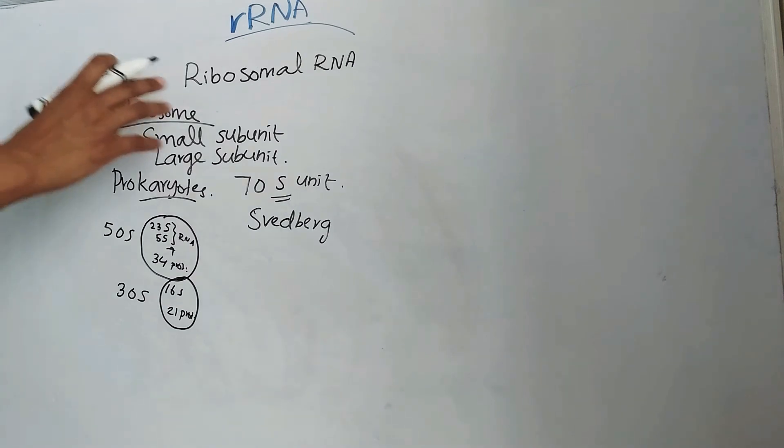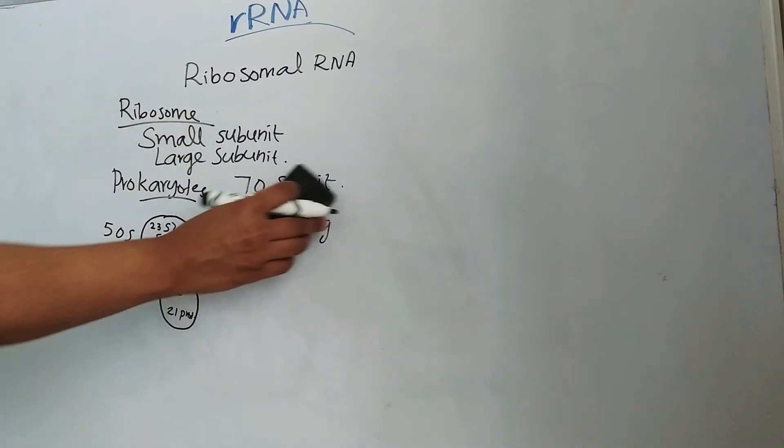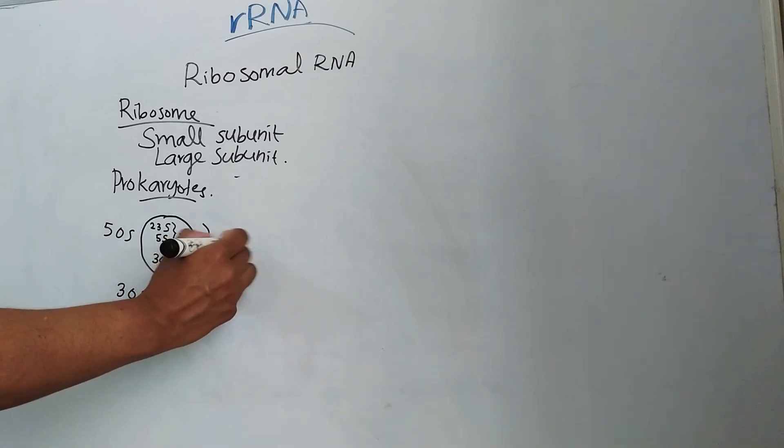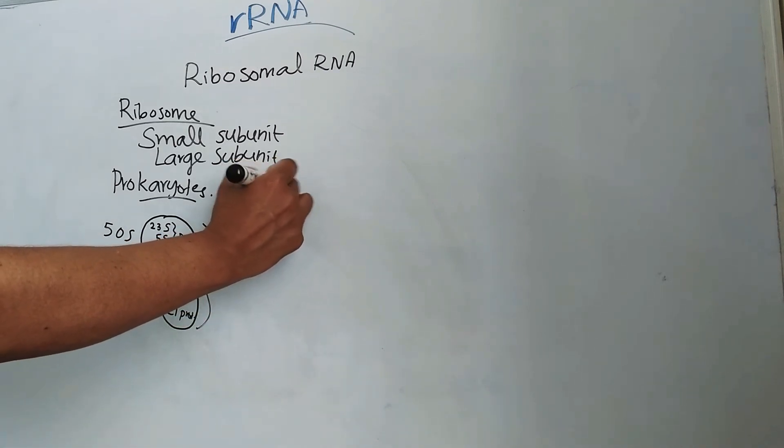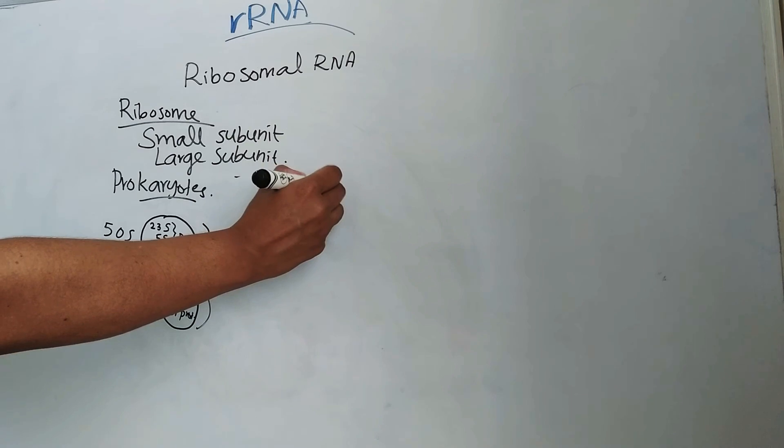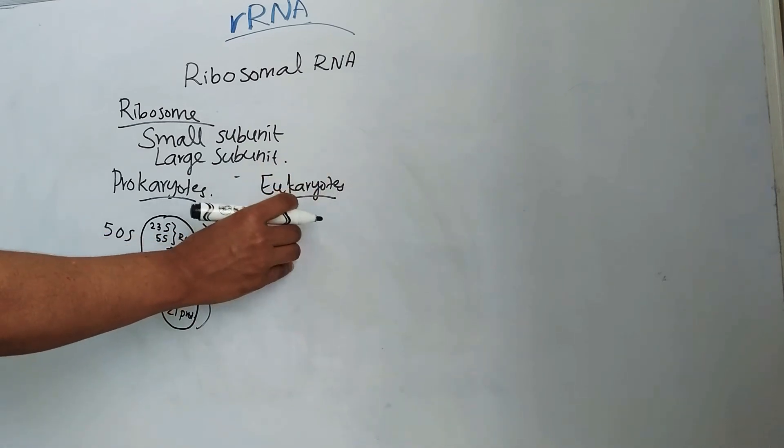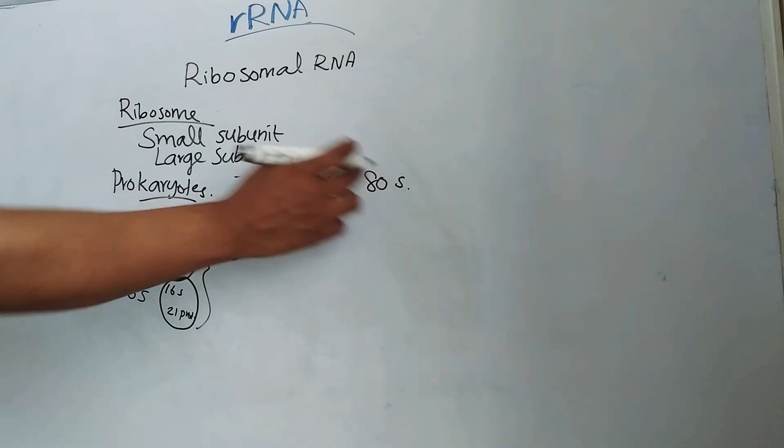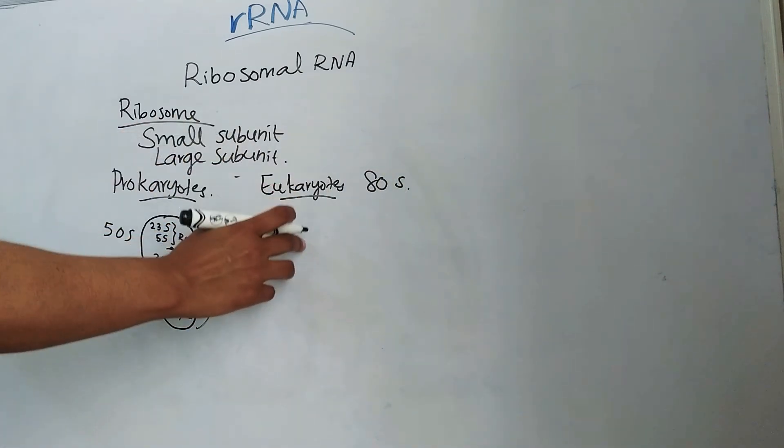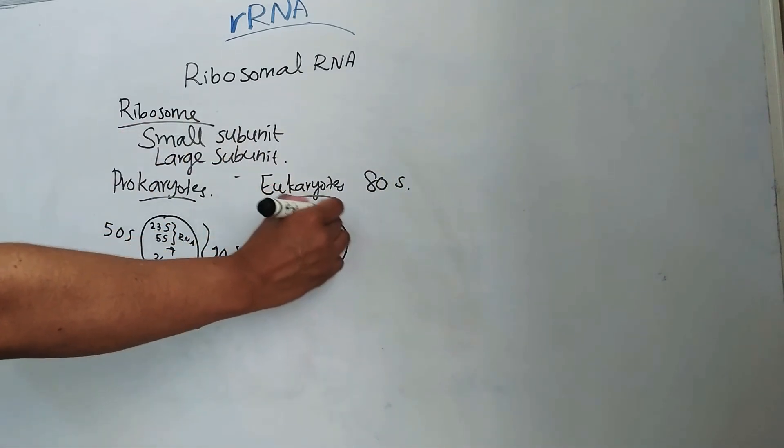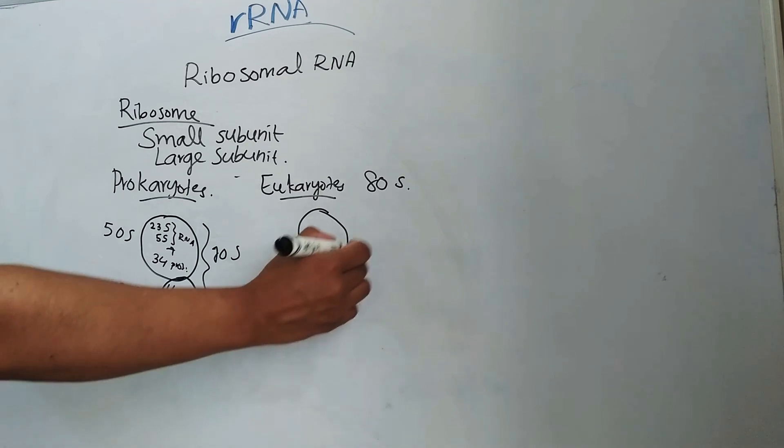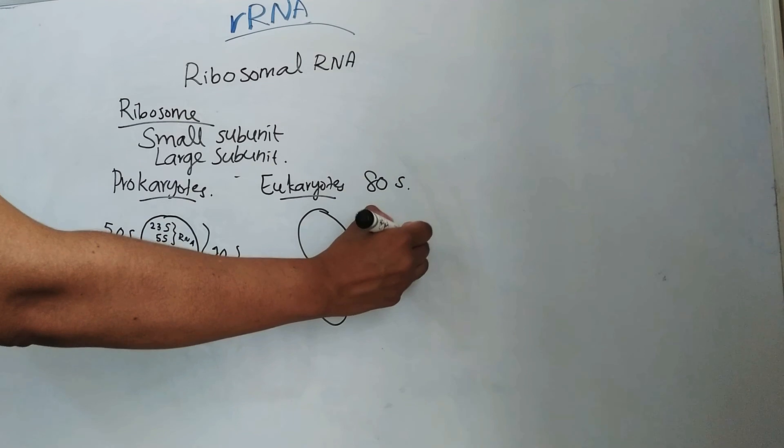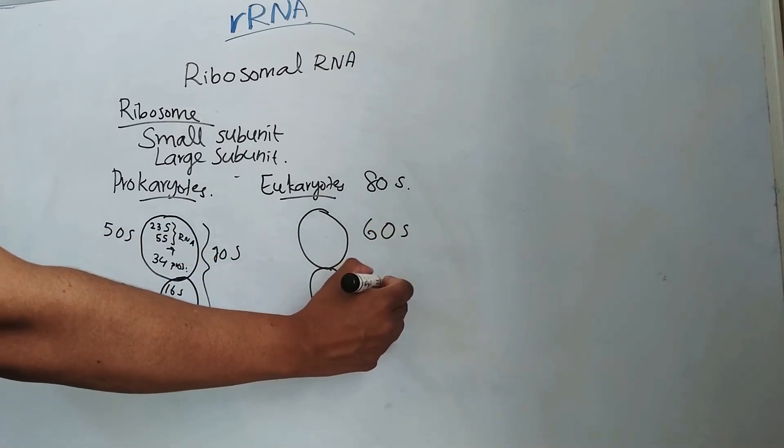That is in prokaryotes. Then in eukaryotes, so total this one is 70S. In eukaryotes, it is of 80S unit. Here the S is Svedberg unit. This 80S is made of a larger subunit and a smaller subunit. Larger subunit is 60S and smaller subunit is 40S.